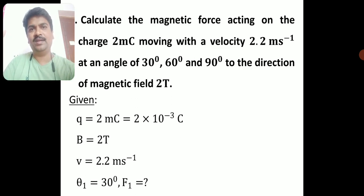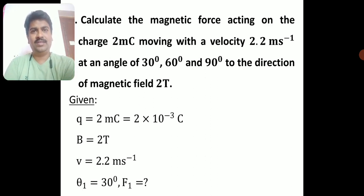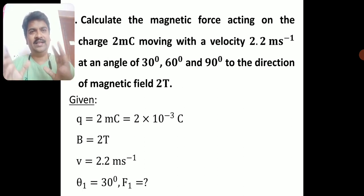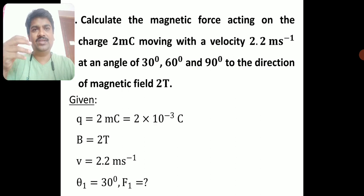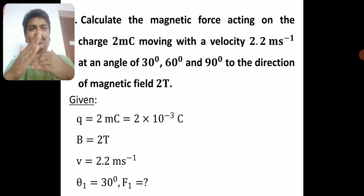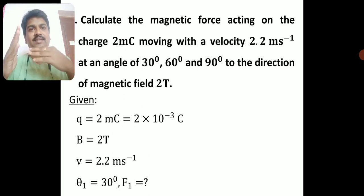Problem 2: Calculate the magnetic force acting on a charge of 2 milli-coulomb moving with velocity 2.2 m/s at angles of 30°, 60°, and 90° to the direction of a magnetic field of 2 tesla. The velocity vector makes three different angles with the magnetic field, so we need to calculate three different forces using F = Bqv sinθ.